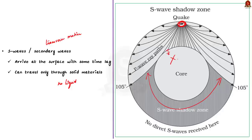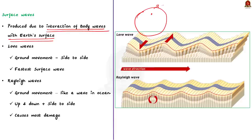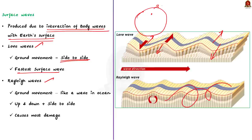Now let us see about the surface waves. Surface waves are caused due to interaction of body waves with the surface of the earth. They develop in the immediate neighborhood of the epicenter and affect only the surface of the earth closer to the epicenter. There are two types of surface waves — love waves and relay waves. Love waves move the ground side to side and are the fastest of the two types. Relay waves move along the ground like a wave rolling on a lake or ocean, moving both up-down and side to side, causing the most shaking and damage.